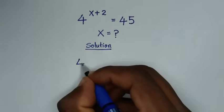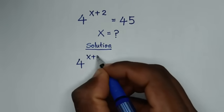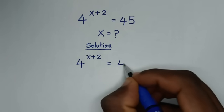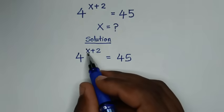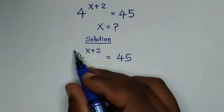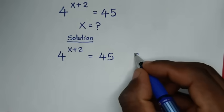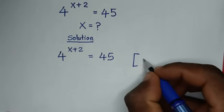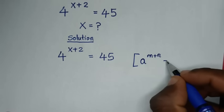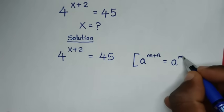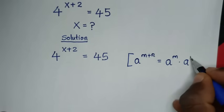From our problem, which is 4 power of x plus 2 is equal to 45, the part 4 power of x plus 2 is in the form of the rule which is a power of m plus n is equal to a power of m times a power of n.